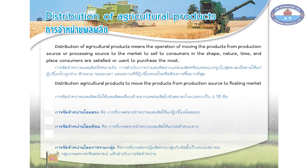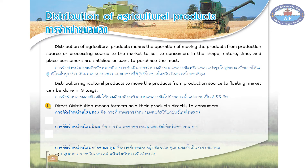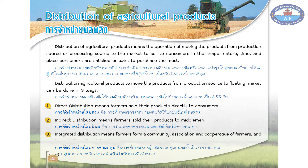Distributing agricultural products from production source to market can be done in three ways: 1. Direct distribution means farmers sold their products directly to consumers. 2. Indirect distribution means farmers sold their products to middlemen. 3. Integrated distribution means farmers form a community, association, and cooperative of farmers and then perform the distribution.